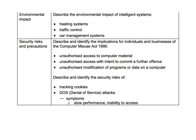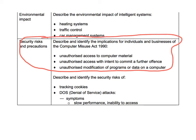The content we're going to be learning today is within the Computer Systems Unit of Computing Science, under security precautions: describe and identify the implications for businesses and individuals of the Computer Misuse Act in relation to unauthorised access to computer material, unauthorised access with intent to commit a further offence, and unauthorised modification of programmes or data on a computer.